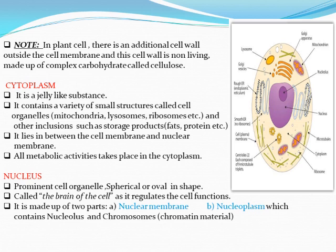The nucleoplasm contains the nucleolus and chromosomes, also called chromatin material. Chromatin material consists of thread-like structures inside the nucleus. Nucleolus and nucleus are two different terms: the nucleus is inside the cell, and the nucleolus is inside the nucleus.